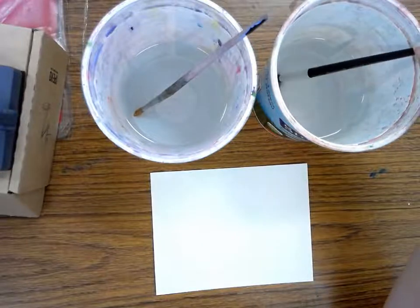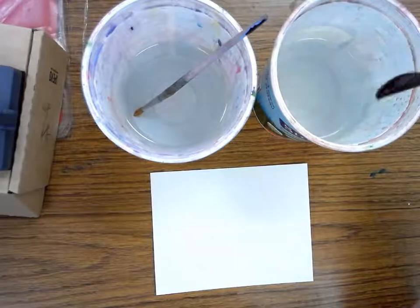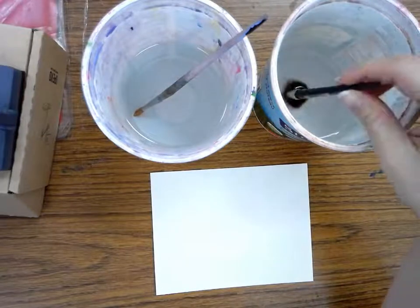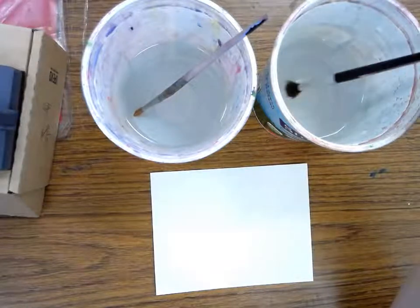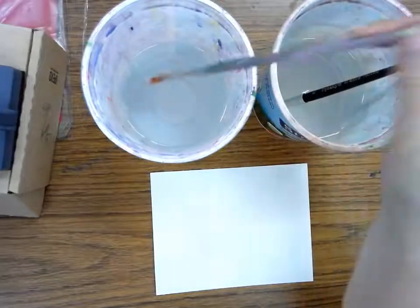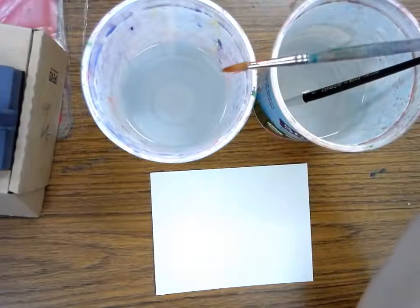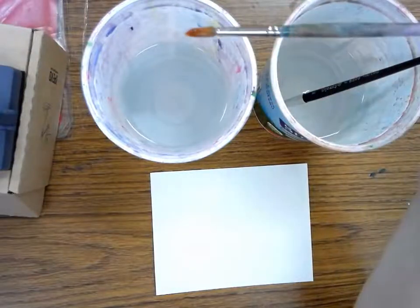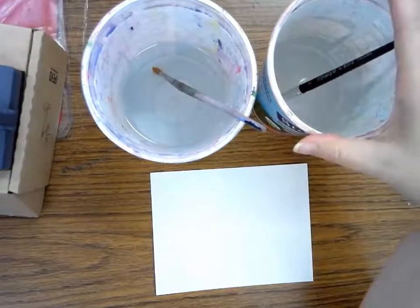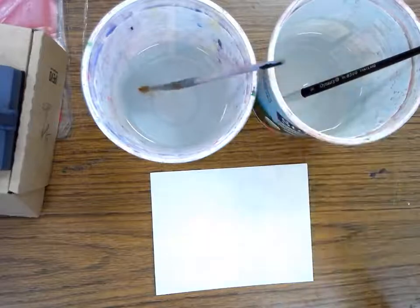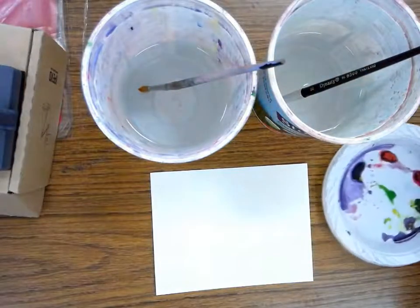I have one water that has a big thick brush in it, and this one I am not going to put any paint in, so this water should stay clear the entire time I'm working. This one I have my skinnier brush in, and this one is the one I'll use when I have paint on my brush. That way we'll have one clean water all the time and then one for our paint.